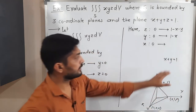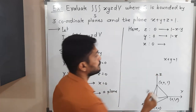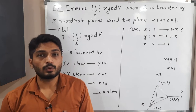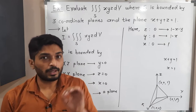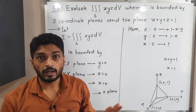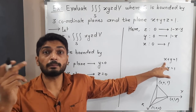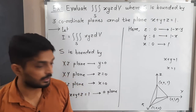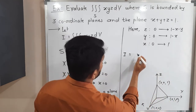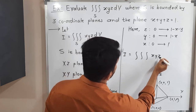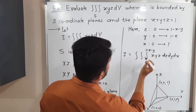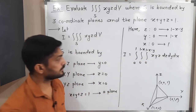Now putting y = 0 in x + y = 1 gives x = 1, so the upper limit of x is 1. To summarize the technique: use the plane equation to get upper limit of z, then put z = 0 to get upper limit of y, then put y = 0 to get upper limit of x. The lower limits are all zero.